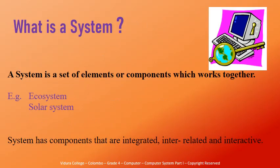What is a system? A system is a set of elements or components or pieces which work together. All the pieces of the system are interrelated and interactive.